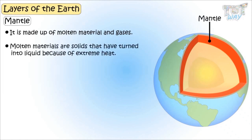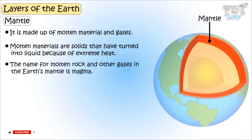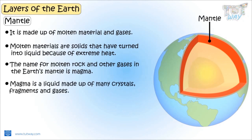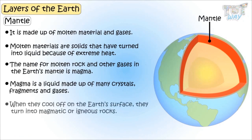Molten materials are solids, like rock, that have turned into liquids because of extreme heat. The name of molten rock and other gases in the earth's mantle is magma. Magma is liquid made up of many crystals, fragments, and gases. When they cool off on the earth's surface, they turn into magmatic, or igneous, rocks.